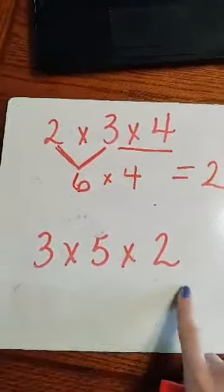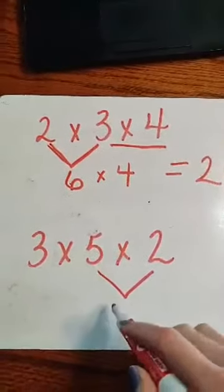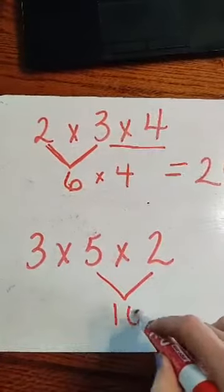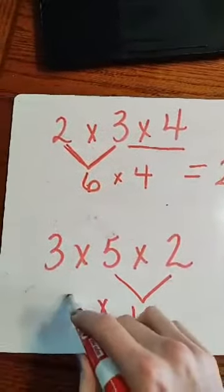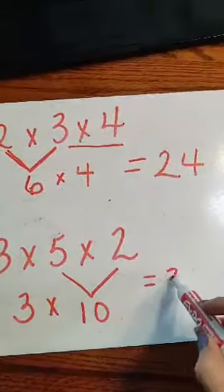Okay, so here, I'm going to pick 5 and 2 to multiply. 5 times 2 is 10. I still have this times 3 over here. So 3 times 10 is 30.